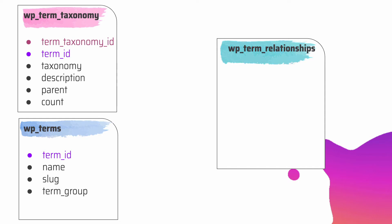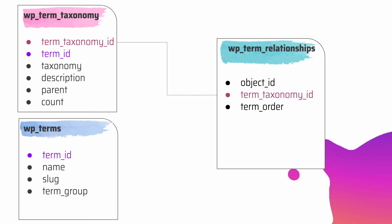WP_term_relationships relates objects such as posts or links to the term_taxonomy_id from the term taxonomy table. It contains the object_id — which in the case of posts is the post ID — the term_taxonomy_id, and the term_order which allows ordering of terms for an object. If you look at the color coding between tables, the term_taxonomy_id has the same color in WP_term_relationships and WP_term_taxonomy, showing they are connected to each other.